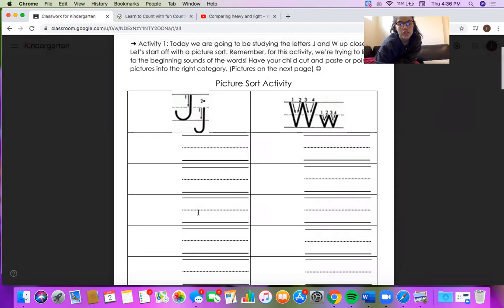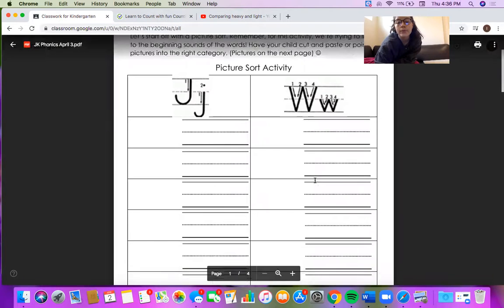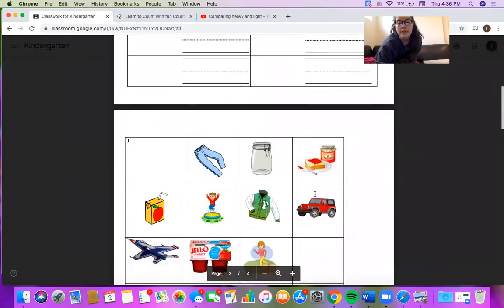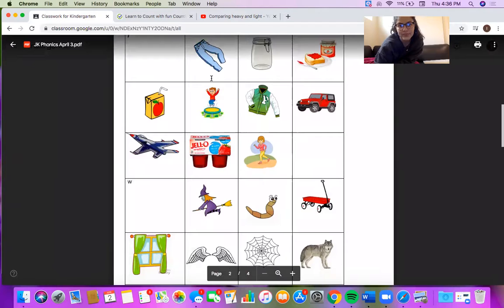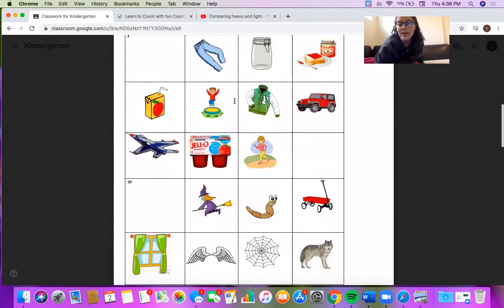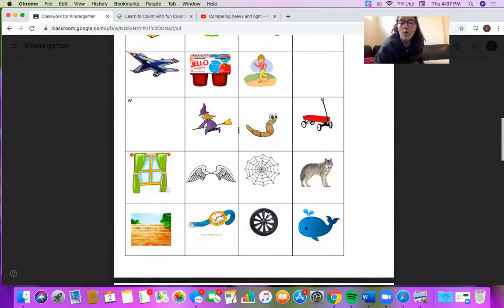Here we have a category for J and here we have a category for W. The pictures are going to be on the next page and I'm gonna go through the pictures with you now to make sure we know what all these pictures are. Ready? These are jeans, jar, jam, juice, jump, jacket, jeep, jet, jello, job.